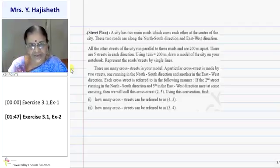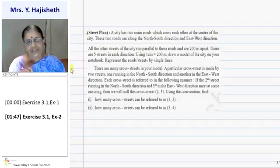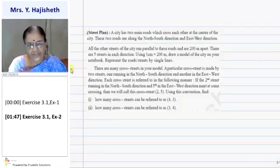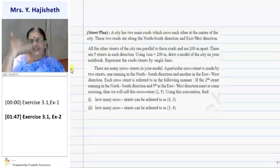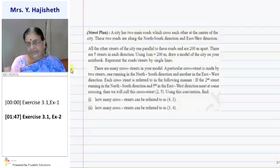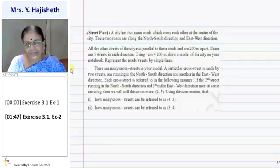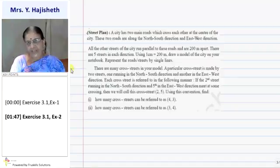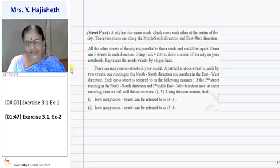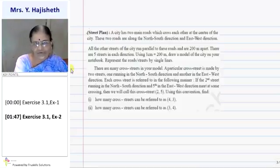Using this convention, find how many cross street can be referred to as 4-3. So, you have 4 horizontal or 3 vertical. How many cross street can be referred to 3-4? 3 horizontally. Right? 4 east-west direction street cross. And 3 north-south street cross. So, this activity also you can do by your own.